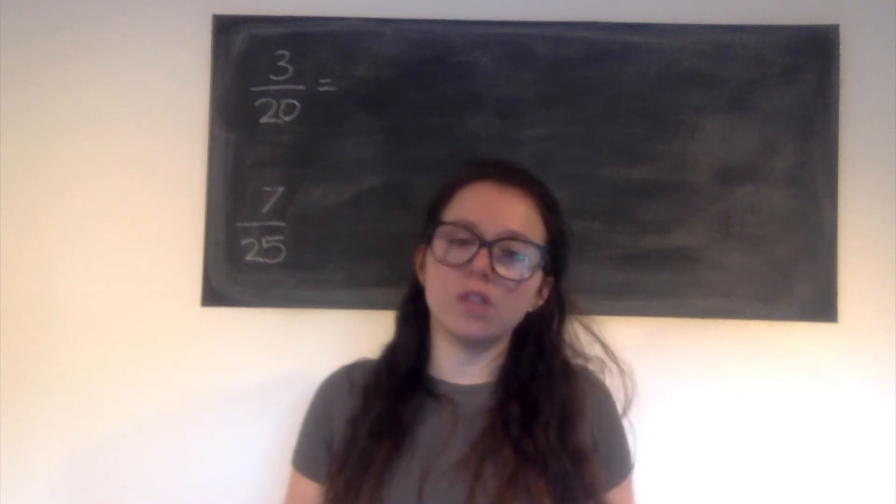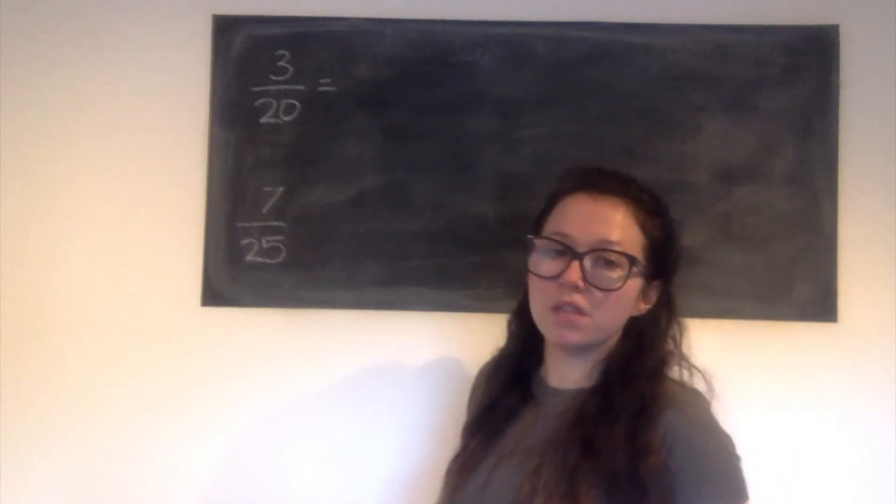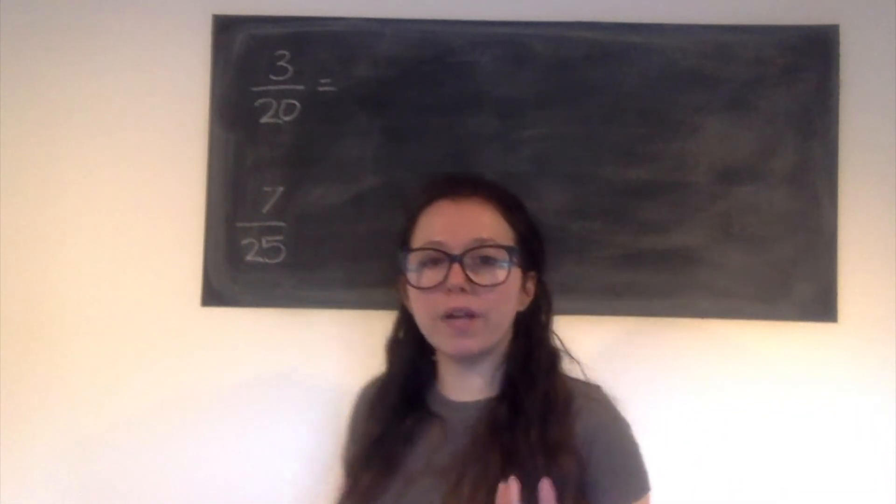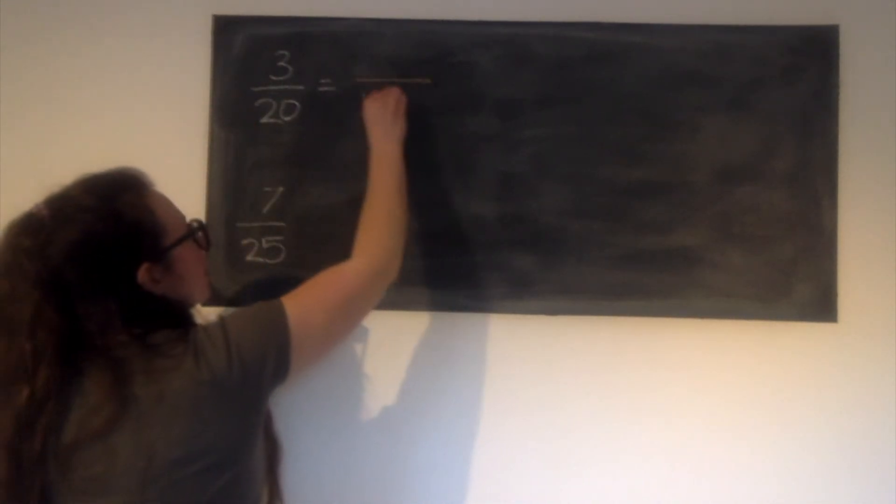Next up we've got some more fractions that I want to turn into percentages. So similar to before. However, this time my denominators aren't already hundredths. So I need to create some equivalent fractions. So to start off I've got 3 twentieths. I know I need my denominator to be hundredths.